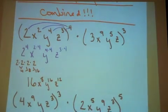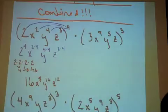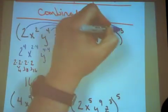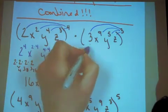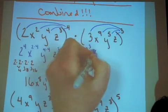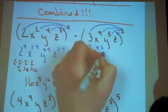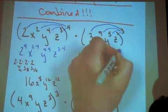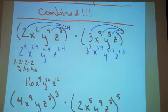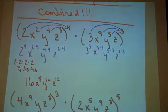Now I have to do the other half. I'm going to distribute this cubed power. So I need to find out what 3 to the 3rd is, x to the 9 times 3, y to the 5 times 3, and z to the invisible 1 times 3. Don't forget that invisible 1.